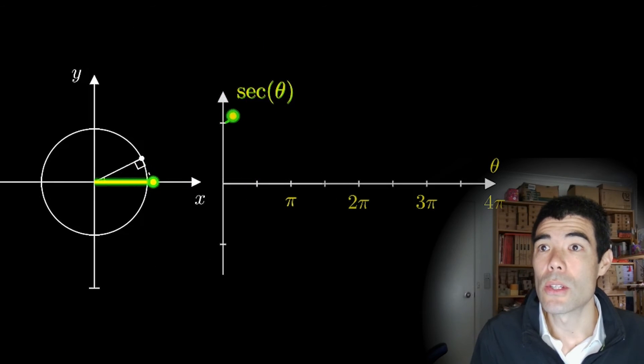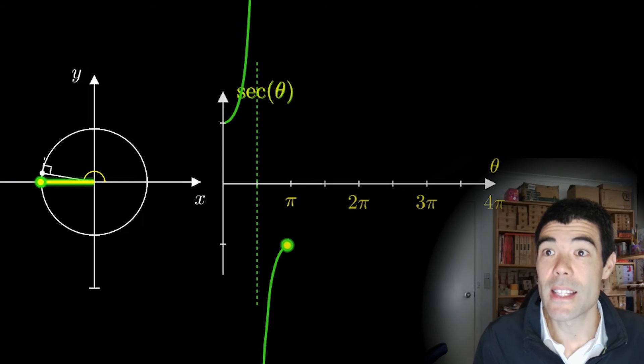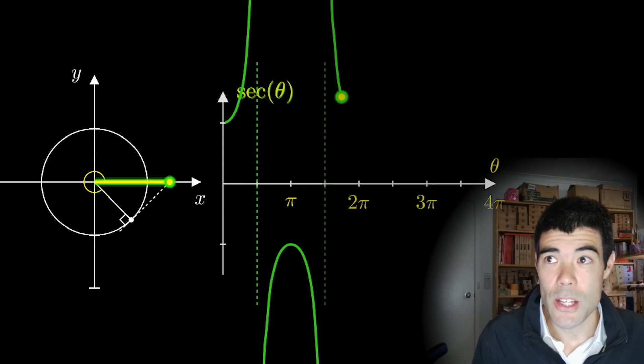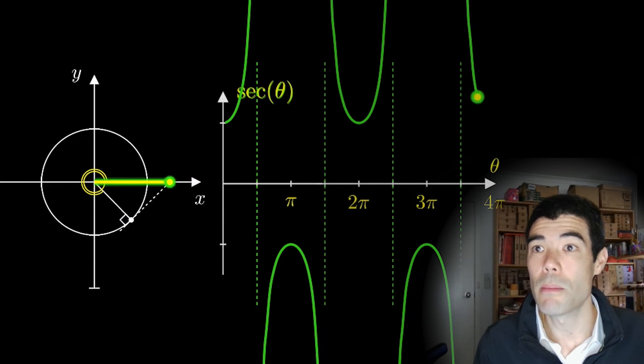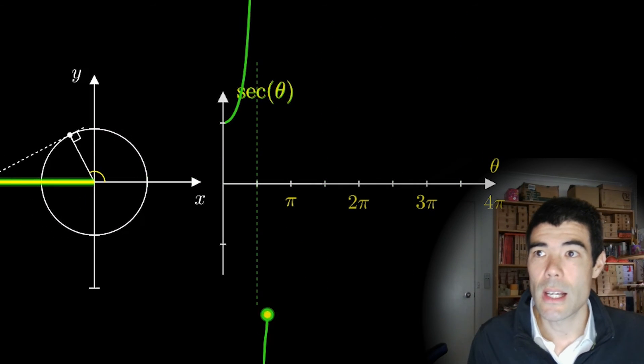Now, the second place on the unit circle we can measure the secant is here. So we create that tangent we had from before and measure the horizontal distance now from the origin to the point where that tangent crosses the x-axis.